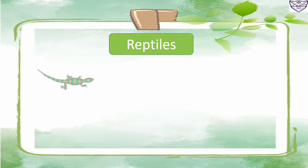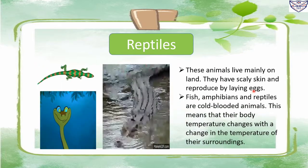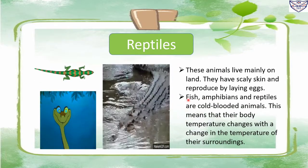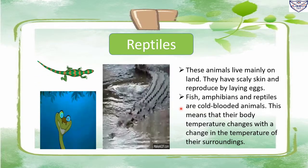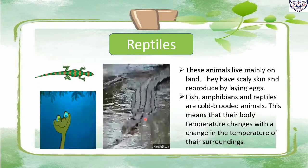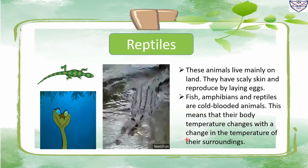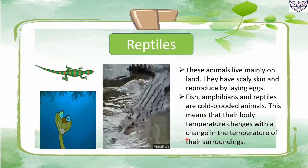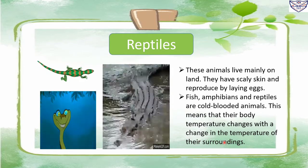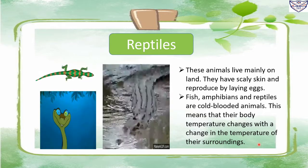Reptiles: these animals live mainly on land. They have scaly skin and reproduce by laying eggs. For example, lizard, snake, and crocodiles are reptiles. Fish, amphibians, and reptiles are cold-blooded animals, meaning their body temperature changes with the temperature of their surroundings.